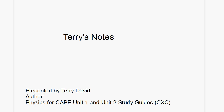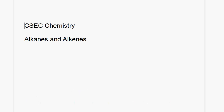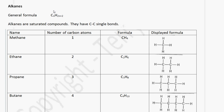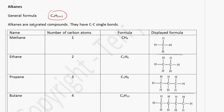Welcome to another episode of Terry's Notes. Today we're going to look at alkanes and alkenes. The general formula for an alkane is CnH2n+2. Alkanes are saturated compounds — they have carbon-to-carbon single bonds present in them.